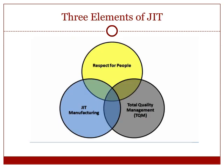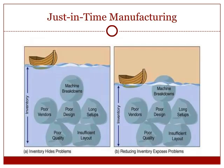This Venn diagram illustrates the overlap of the three elements of JIT. The three elements are respect for people, JIT manufacturing, and total quality management.